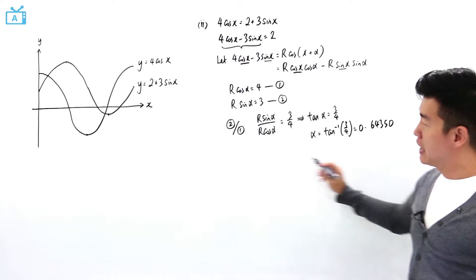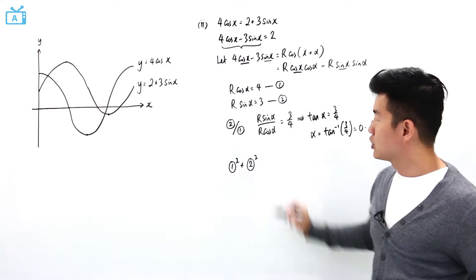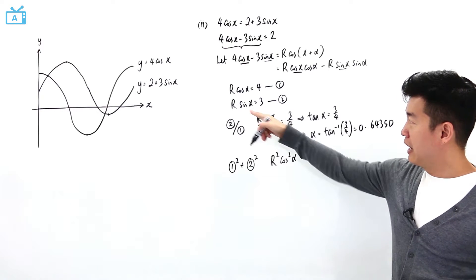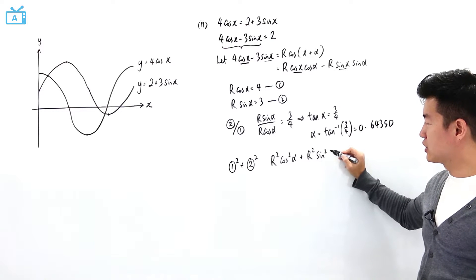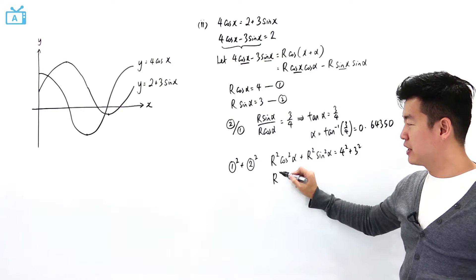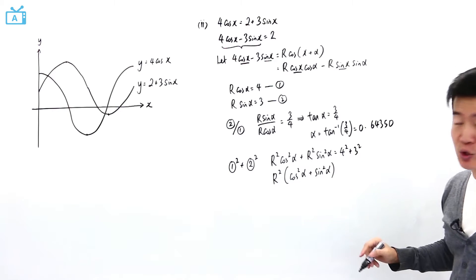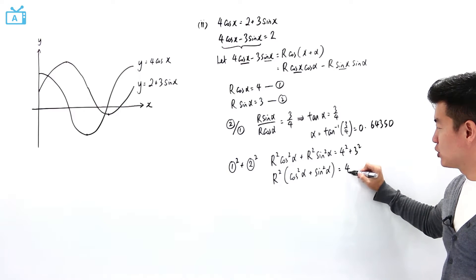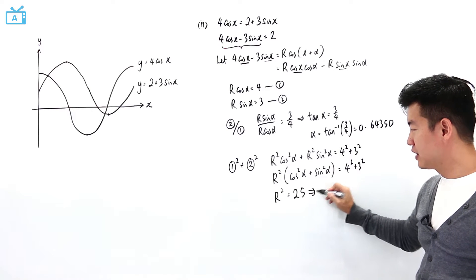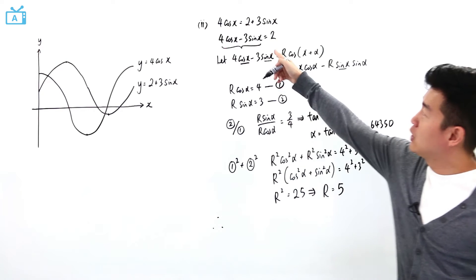Now I'll solve for R by taking equation 1 squared plus equation 2 squared. That gives R² cos²α + R² sin²α = 4² + 3². Factoring out R², I have R²(cos²α + sin²α) = 16 + 9. Since cos²α + sin²α = 1, R² = 25, so R = √25 = 5.